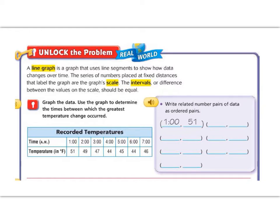So you can see here we have a graph of recorded temperatures, so we have time and temperature. At one o'clock a.m. it was 51 degrees, at 2 o'clock it was 49, at 3 o'clock 47. Okay, so now let's go ahead and take this information and we're going to make them into ordered pairs.